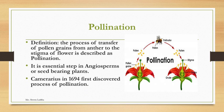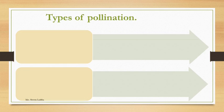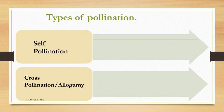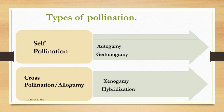Camerarius in 1694 discovered this process of pollination. There are two types of pollination: self-pollination and cross-pollination. Cross-pollination is also called allogamy. Self-pollination is of two types: autogamy and geitonogamy. Xenogamy and hybridization are two types of cross-pollination.